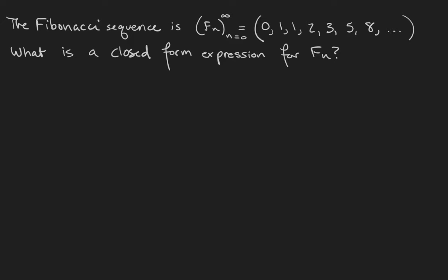Take a minute, try to find the closed form expression for Fn, and you're going to see that you have a hard time doing so. But what you might have noticed is that each term in the Fibonacci sequence can be written as the sum of the two terms preceding it.